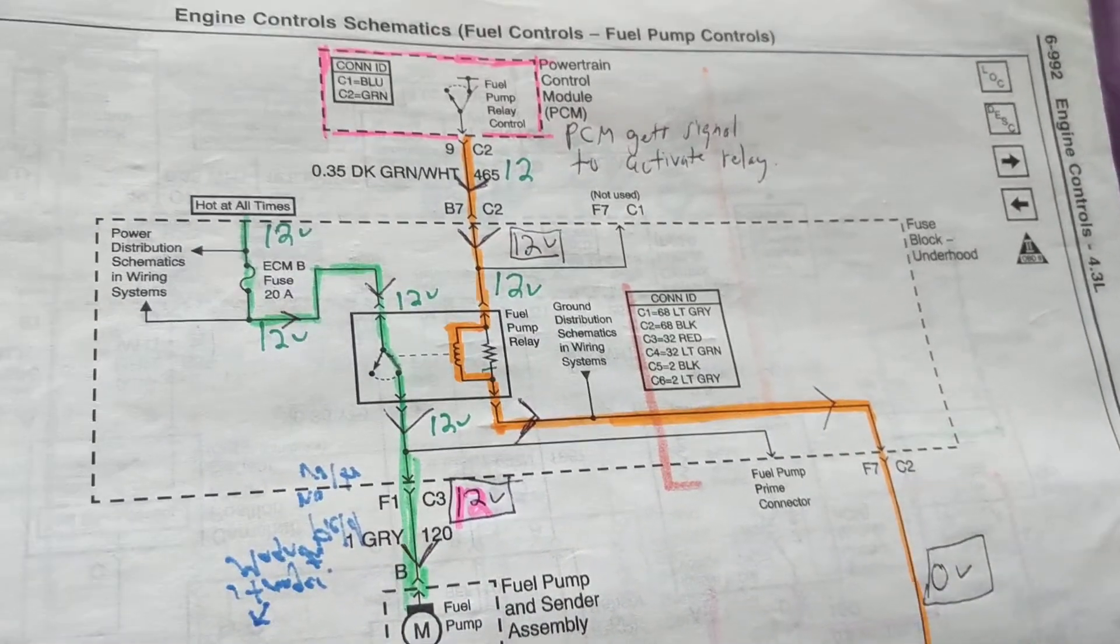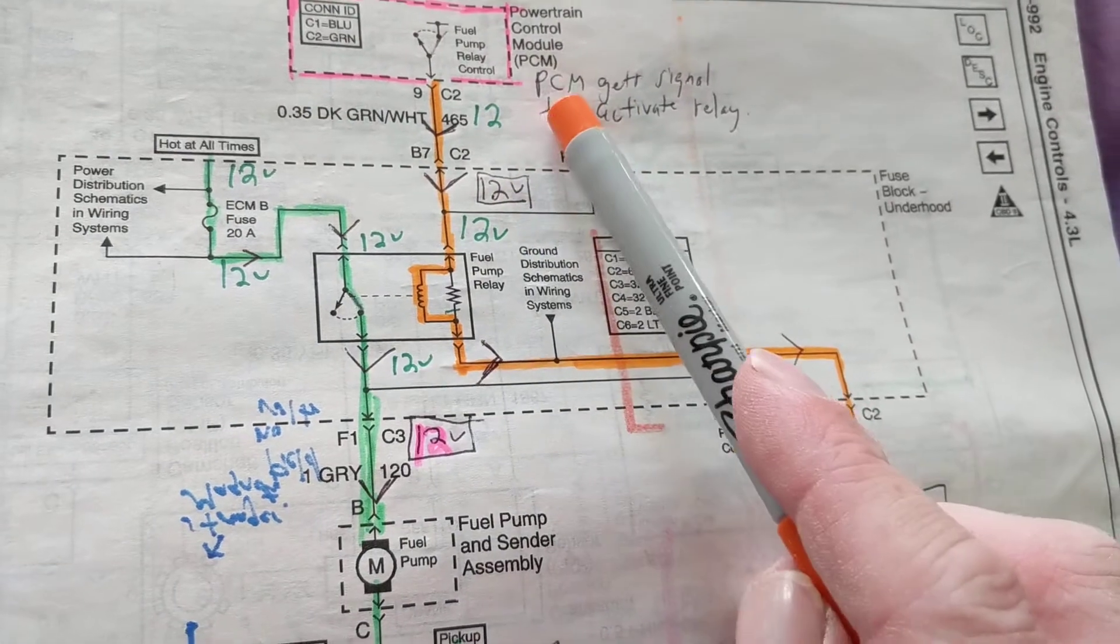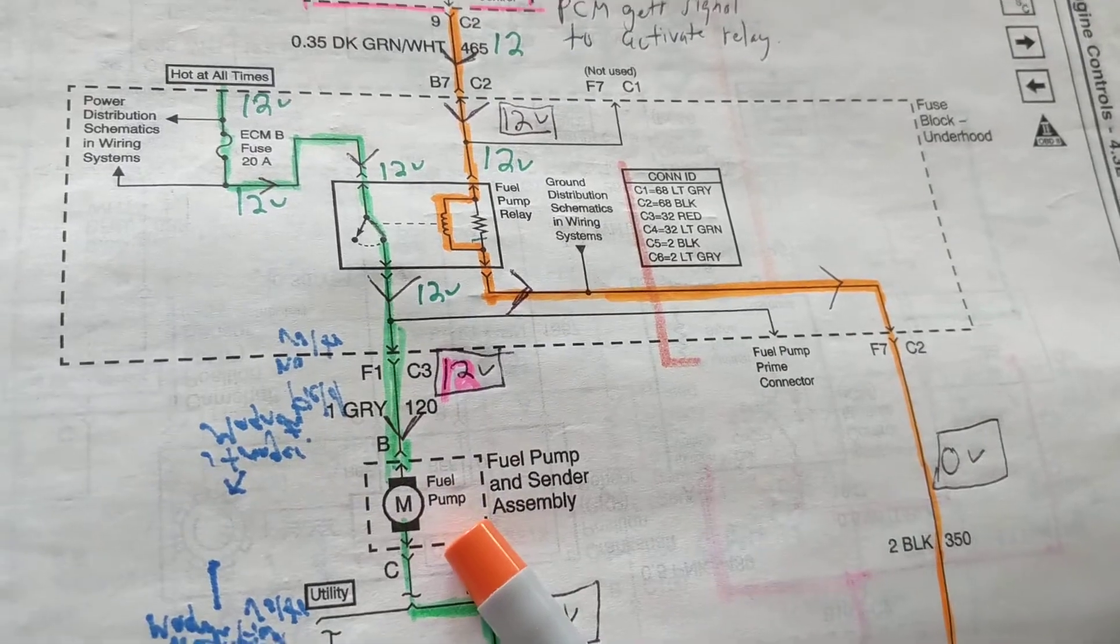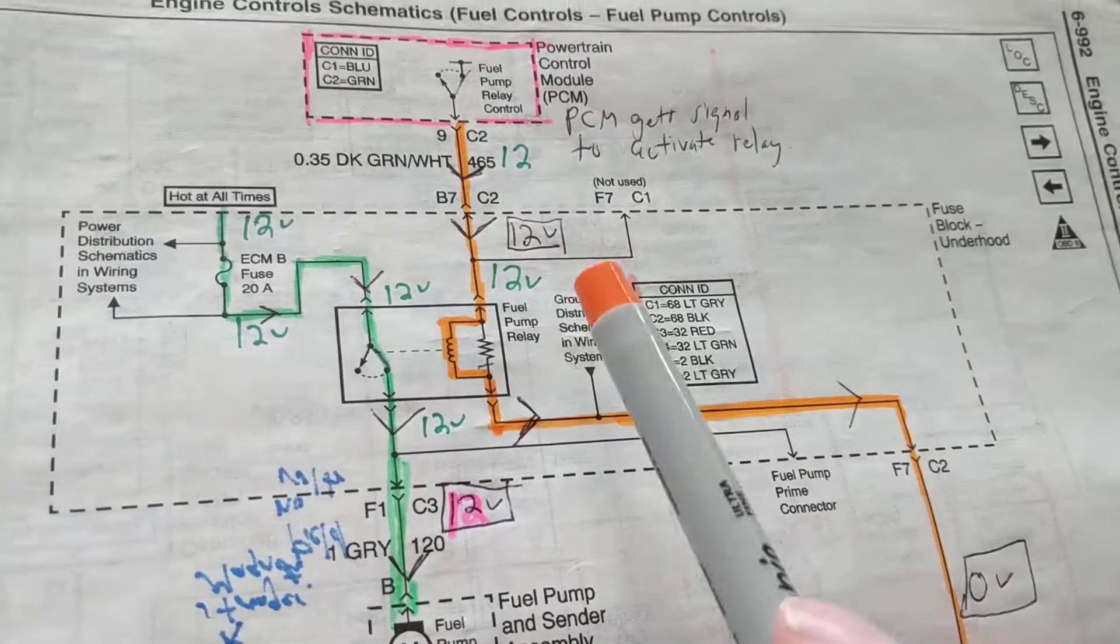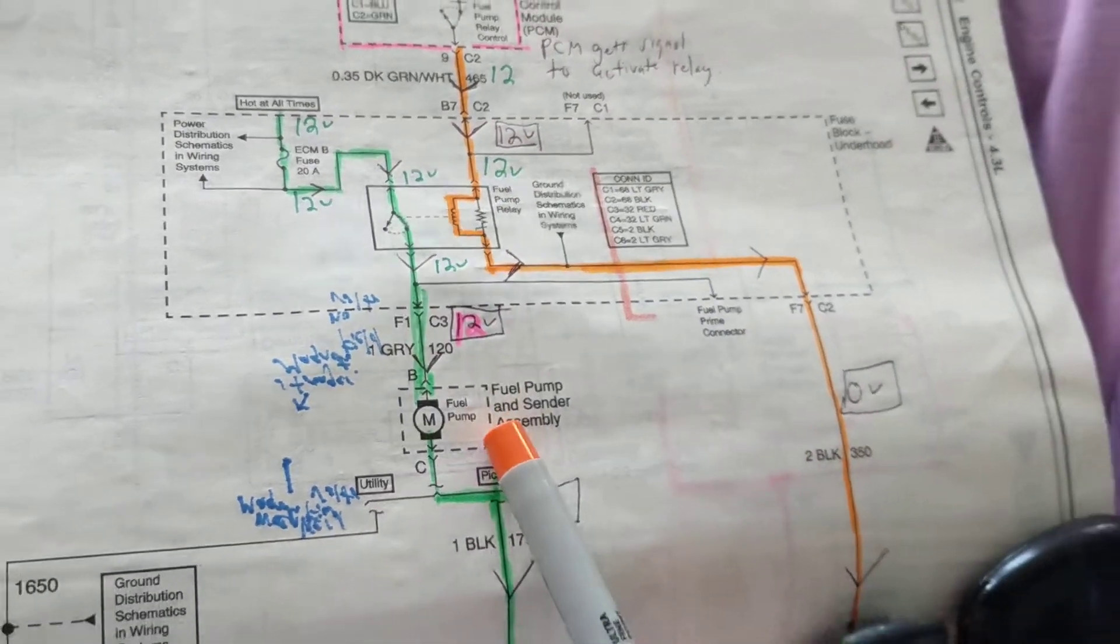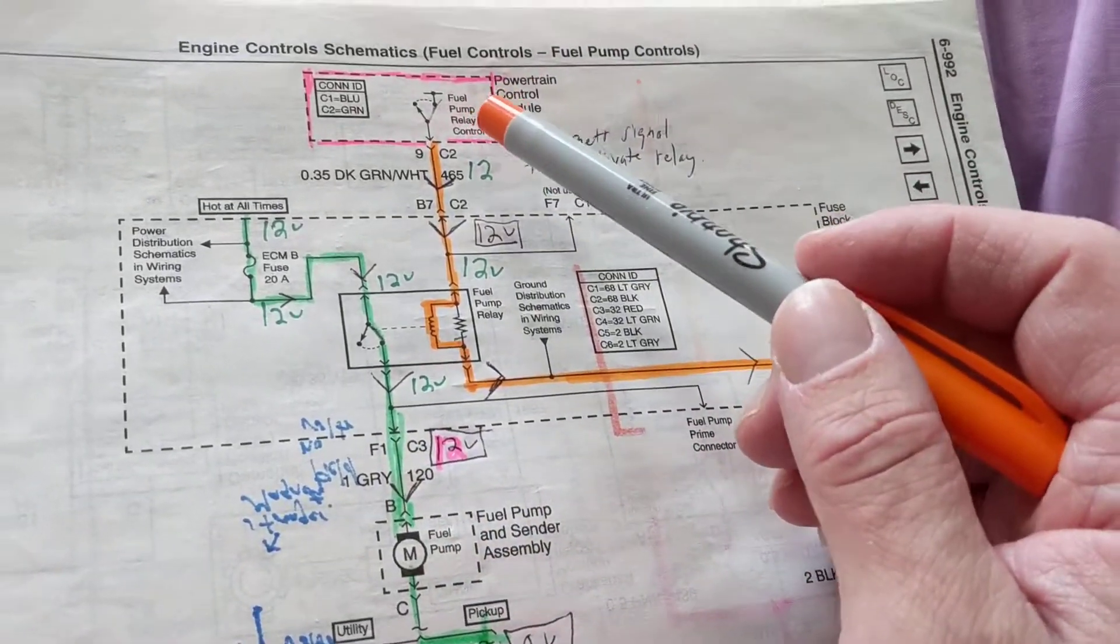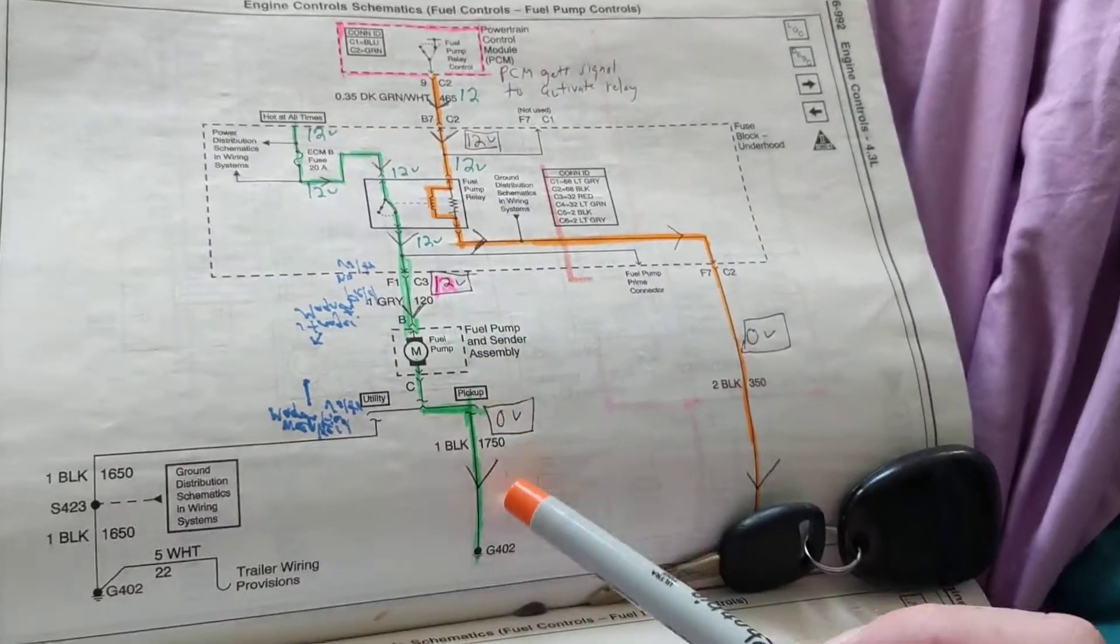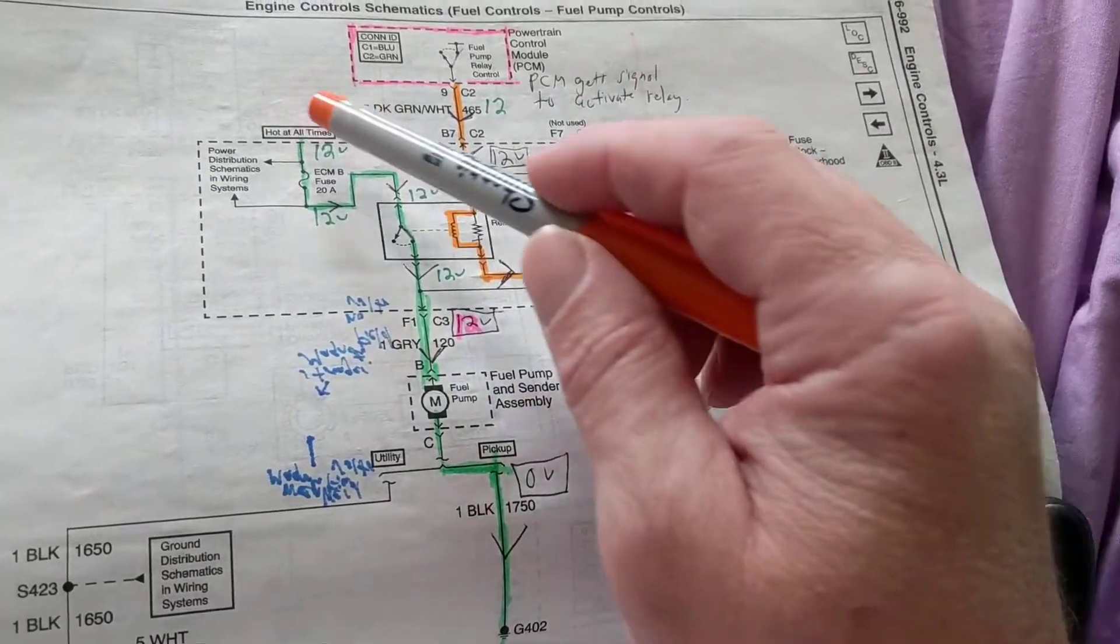Now the problem is over here, usually you get a computer. Computers are always involved. The PCM is always involved with turning on the fuel pump relay to turn on the fuel pump. As you can see, first goes the fuel pump relay which is activated, then goes the fuel pump. Now sometimes you have a computer controlling 12 volts, sometimes you have a computer controlling ground.